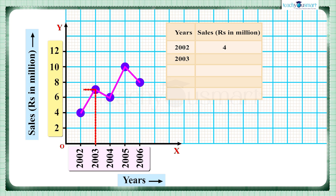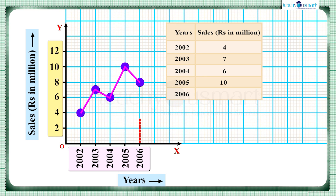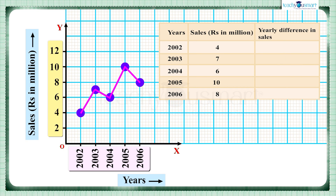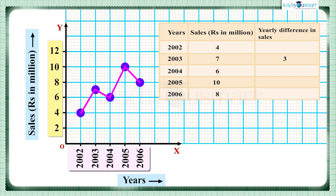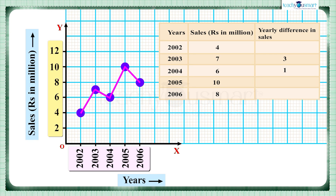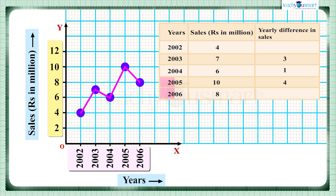In 2003 the sales were 7 million, in 2004 the sales were 6 million, in 2005 the sales were 10 million, and in 2006 the sales were 8 million. Taking the sales difference between consecutive years: 2002 to 2003 was 3 million, 2003 to 2004 was 1 million, 2004 to 2005 was 4 million, and 2005 to 2006 was 2 million.